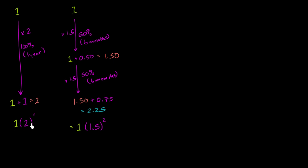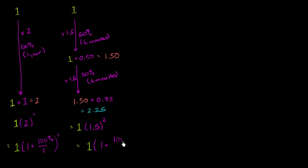If you wanted to see how this relates to the interest, this is equal to 1 times (1 plus 100% divided by 1 period) to the first power. You'll see that we can keep writing this as we compound over different periods. This one we can rewrite as 1 times (1 plus 100% over 2) squared — we took our 100% for the year and divided it into two six-month periods, each at 50%, and compounded it over two periods.